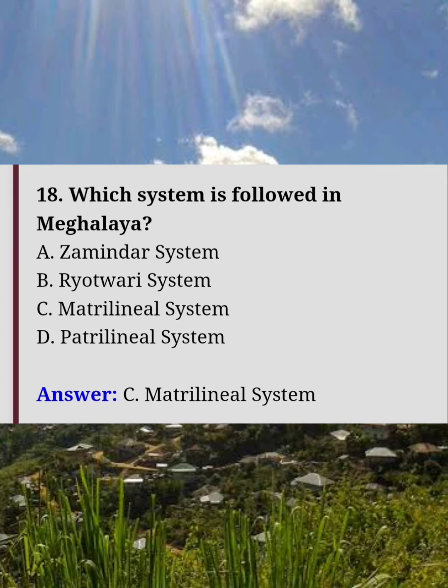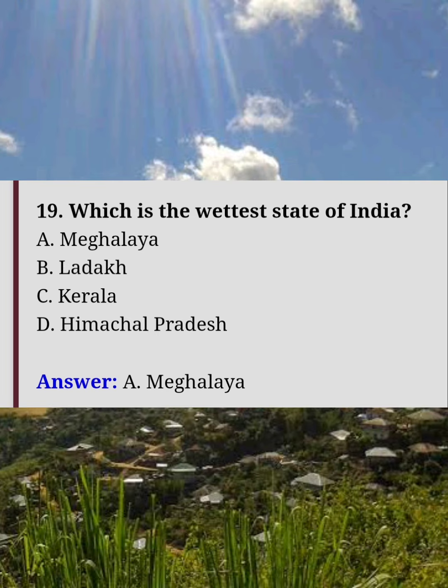Which system is followed in Meghalaya? Answer C: Matrilineal system. Which is the greatest state of India in terms of rainfall? Answer A: Meghalaya.